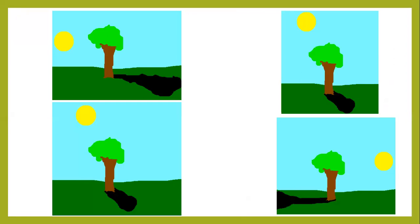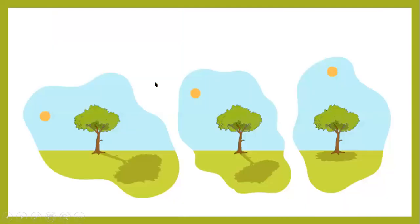We also talked about how in the morning and in the evening, shadows are longer, and at midday the shadow is shorter. The source of light is the sun, and this is the object — a tree. When the object stops or blocks the light, a shadow happens. As you can see, in the morning the shadow is longer, and when the sun is high the shadow is shorter.